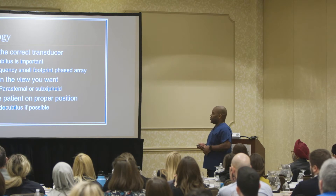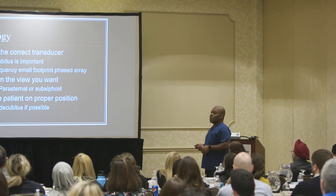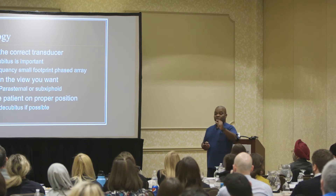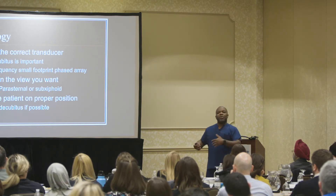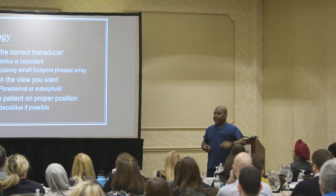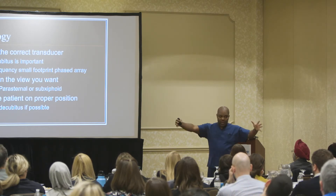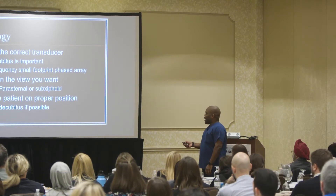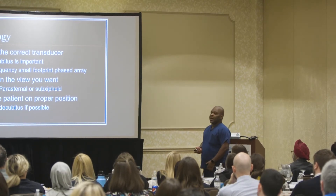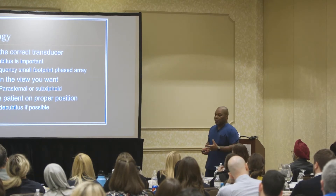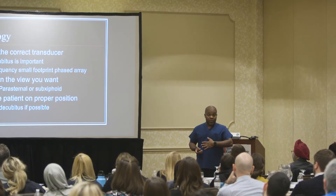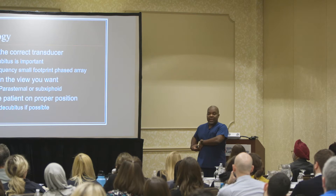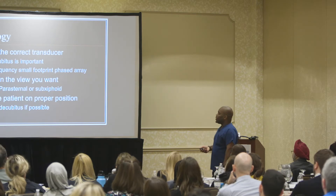The important thing to think about with your transducer is the body habitus and what we call the footprint — the part that touches the patient. You might have a wide footprint or a narrow footprint. Think about what you're looking for: am I looking between the ribs? Then I want the narrow one. Am I looking at the abdomen of a large patient? Then I probably want the wide one. And decide what view is best — if I want to see the right kidney, I can go to the right flank where the kidney lies rather than spending six hours from the anterior abdomen.